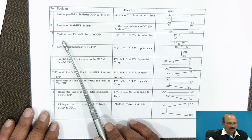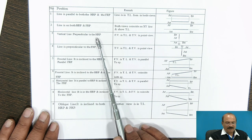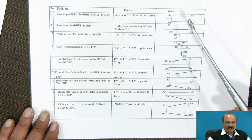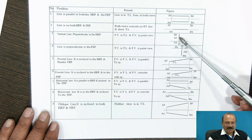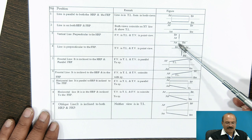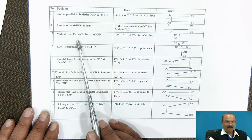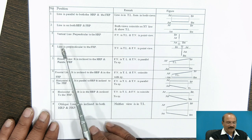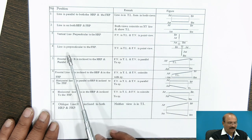Vertical line perpendicular to HRP — it is above the XY line. This line is a straight line, and in the top view you are going to get this as a single point. This is what you call a vertical line. In the next diagram also we are going to see the detail of this line.